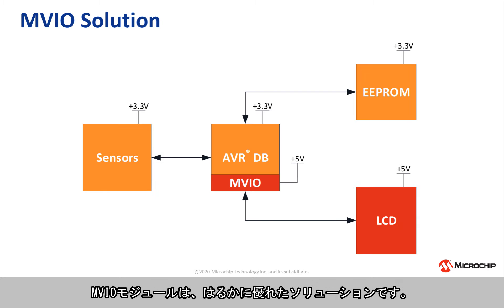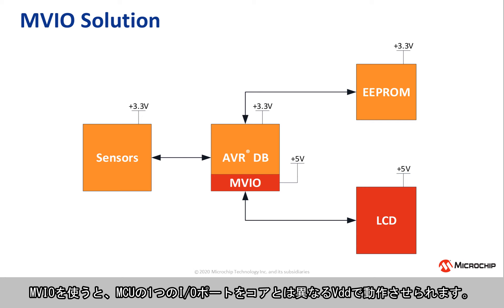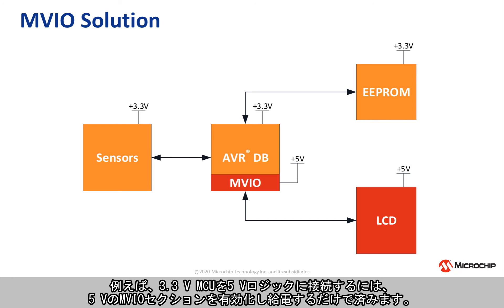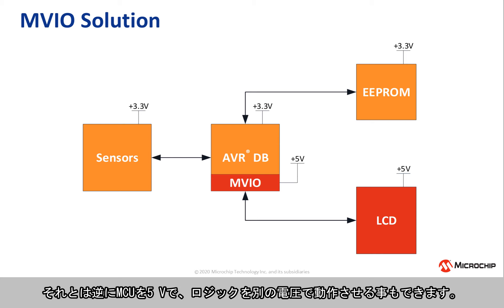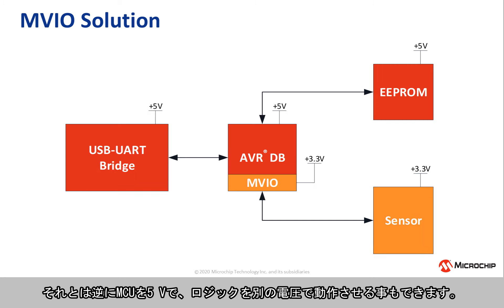The MVIO peripheral is a much better solution to this problem. MVIO allows for a specific IO port of the microcontroller to run at a different VDD than the core. For instance, to interface a 3.3V microcontroller with 5V logic, simply enable and power the MVIO section with 5V. The rest of the microcontroller can run at 3.3V or another valid level. This can also be used in reverse with the microcontroller at 5V and the logic at some arbitrary level.